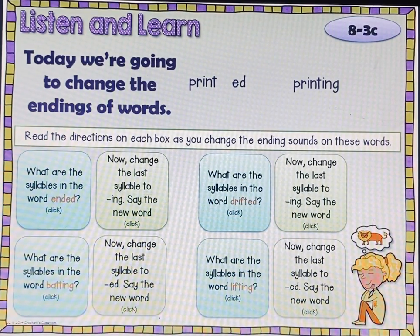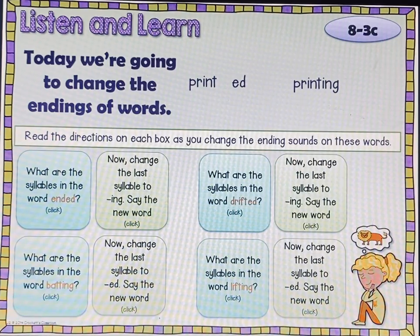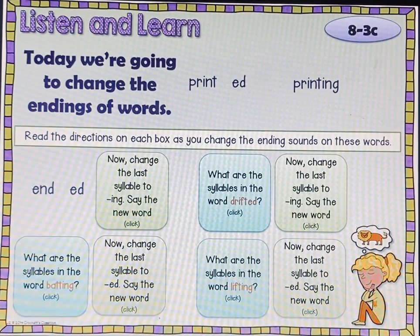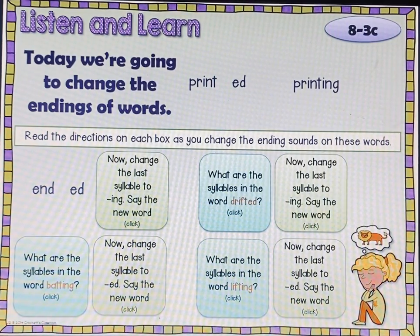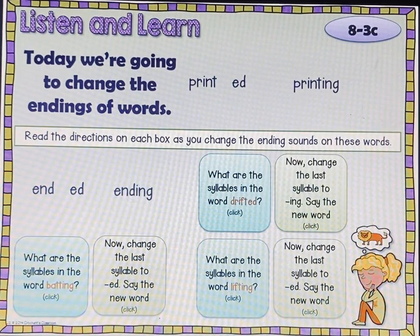We're going to read the directions on each box and change the ending sounds on the words. The first one says: what are the syllables in the word 'ended'? Check, pause, play. The syllables are 'end' and 'ed.' Now change the last syllable to 'ing' and say the new word. Check, pause, play. We change the 'ed' to 'ing' and we have 'ending.'